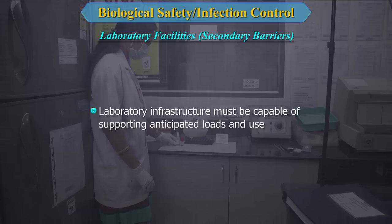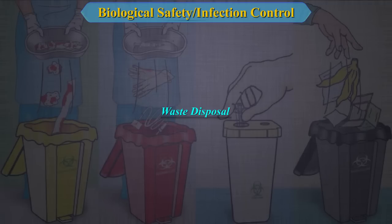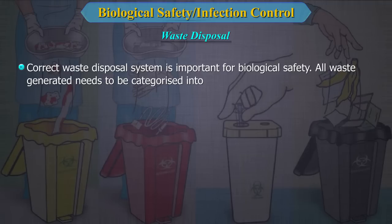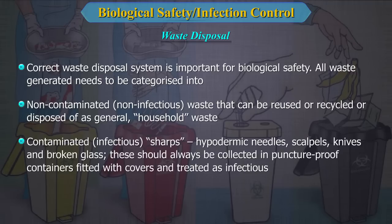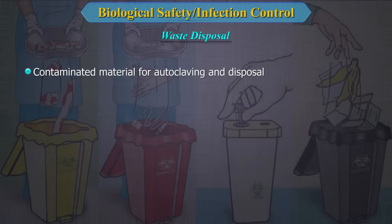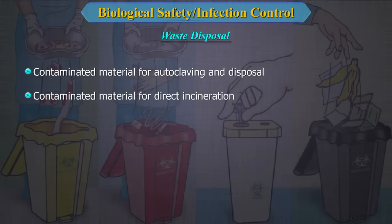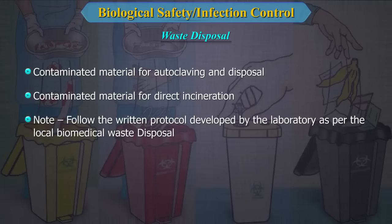Waste disposal is a very important item. A correct waste disposal system is important for biological safety. All waste must be categorized into: 1. Non-contaminated, non-infectious waste that can be reused, recycled or disposed of as general household waste. 2. Contaminated or infectious sharps — hypodermic needles, scalpels, knives and broken glass — collected in puncture-proof containers and treated as infectious. 3. Contaminated material for autoclaving and disposal. 4. Contaminated material for direct incineration. You must follow the written protocol developed by the laboratory per local biomedical waste disposal regulations.